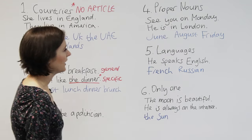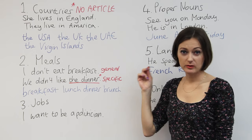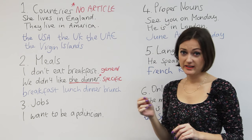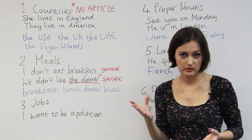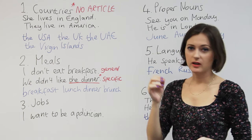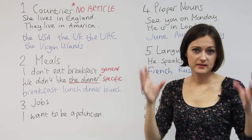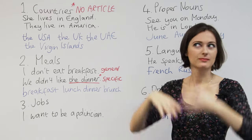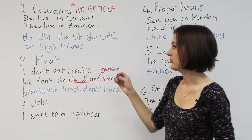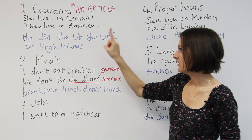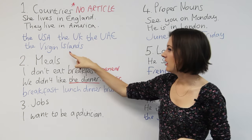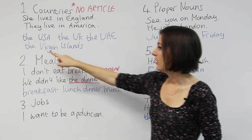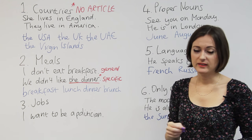There are eight different rules. Rule number one: when we're talking about countries, most countries we don't use an article. So here are some sentences: 'She lives in England.' 'They live in America.' We don't use articles. But if the country is considered to be a nation-state, a collection of different states, or a collection of different countries in one bigger state, then we use articles. For example: the USA, the UK, the UAE. Also, when a country is a group of islands, we use articles — the Virgin Islands, the Philippines.